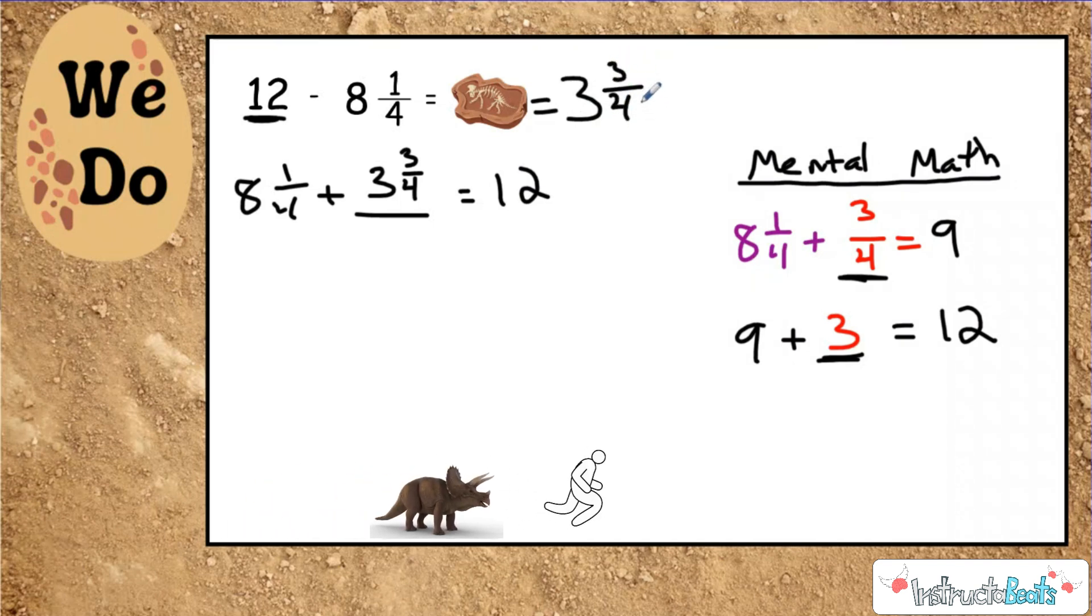So the value of our fossil right here would be three and three-fourths. And of course, if a triceratops is ever running after you, you want to run away very quickly. Let's take a look at the you-try problem.